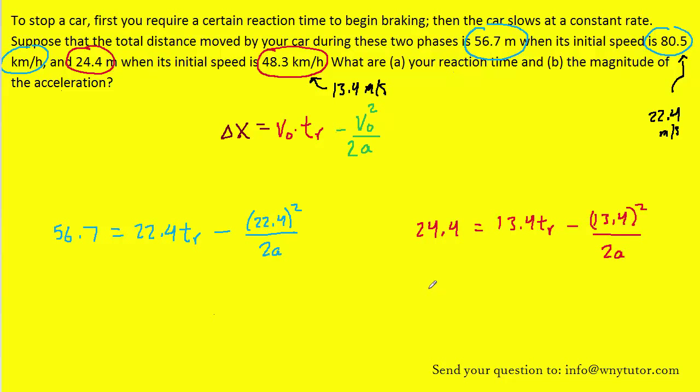We've got two equations with two unknowns, those unknowns being t sub r and also the acceleration. There are many ways to do this, but perhaps one way might be to solve each equation for 2a and then set those equations equal to each other. We could do that by subtracting the 22.4 tr over to the other side. We would have a negative sign left on the right side, so we can actually just multiply both sides by negative 1. That would change this to a positive, change this to a negative, and change this to a positive.